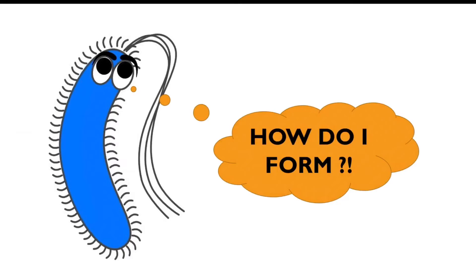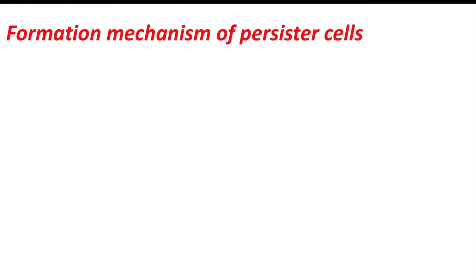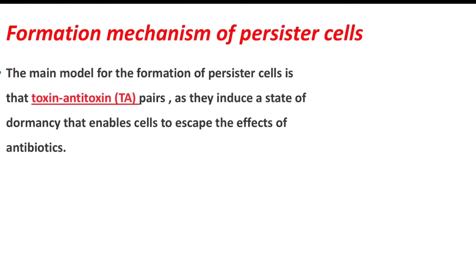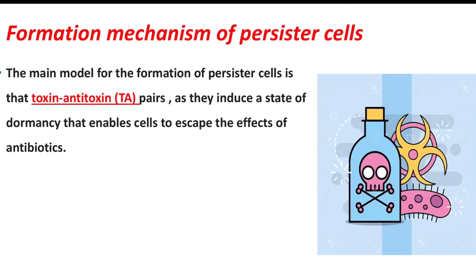Assalamu alaikum, I am Maryam Khaled, and I will explain how these persister cells form. The main model for the formation of persister cells is the toxin-antitoxin pairs, as they induce a state of dormancy that enables cells to escape the effects of antibiotics. So we should know the meaning of the toxin-antitoxin system.